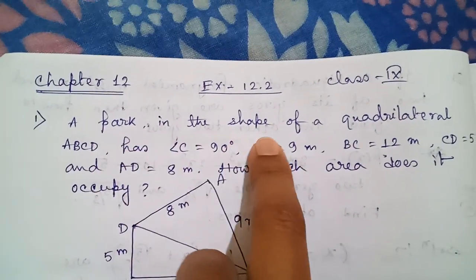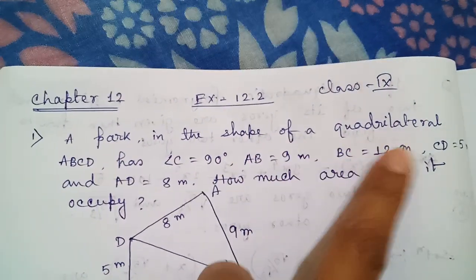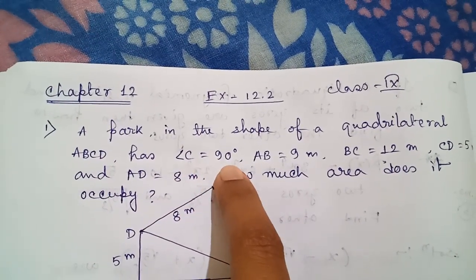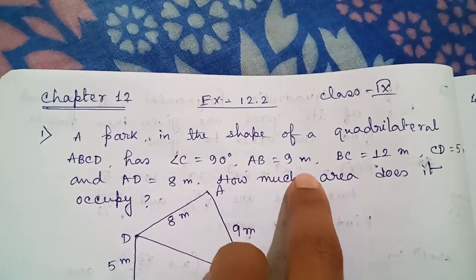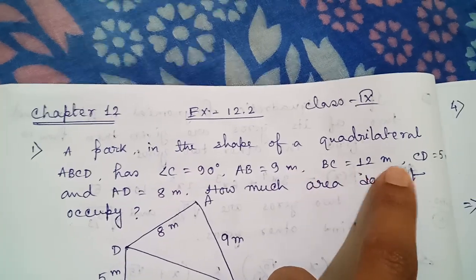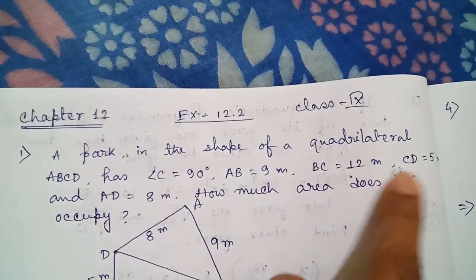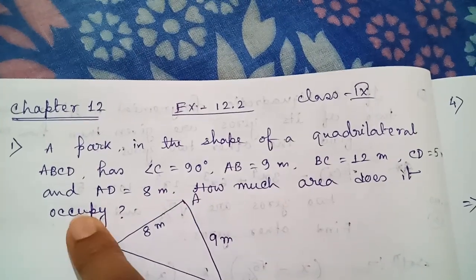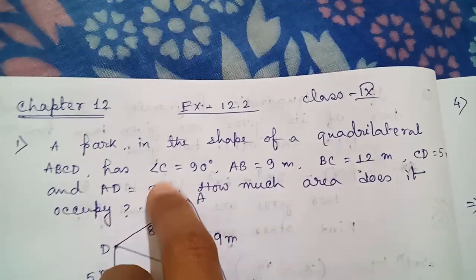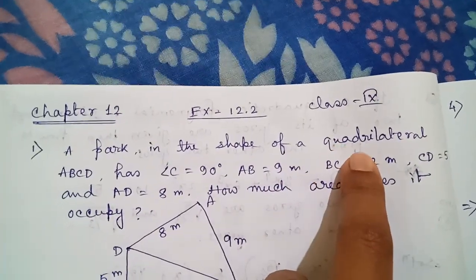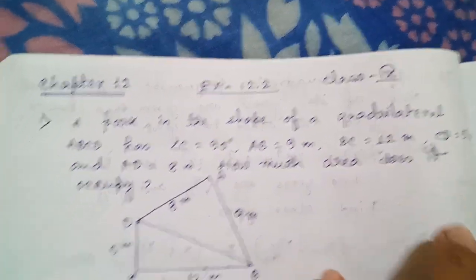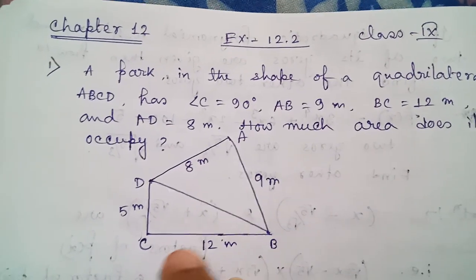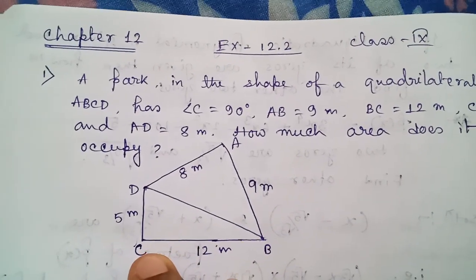A park in the shape of a quadrilateral ABCD has angle C equals 90 degrees, AB equals 9 meters, BC 12 meters, CD 5 meters, and AD 8 meters. We have to find out how much area it occupies — that means the whole quadrilateral area. The quadrilateral will be looking like this where angle C is 90 degrees.